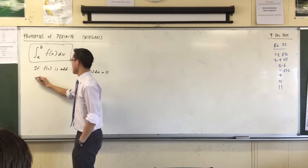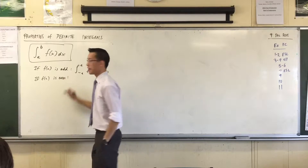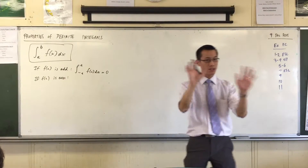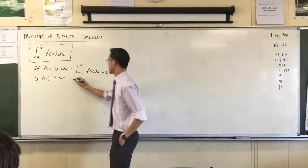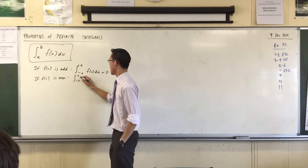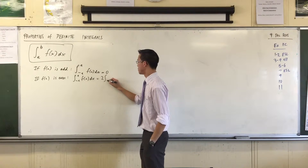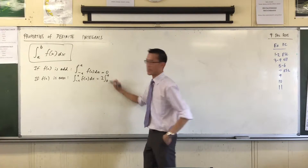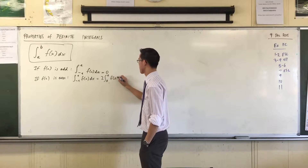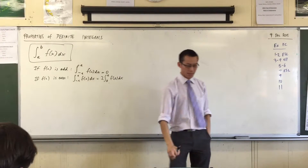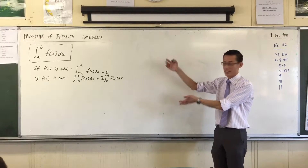Correspondingly, if you have an even function and you integrate from negative a to a, you don't treat those as two separate areas — you consider it as double the area from zero to a. So the integral from negative a to a equals double the integral from zero to a, because you take it right down the middle along the axis of symmetry. We call these the two symmetric identities.